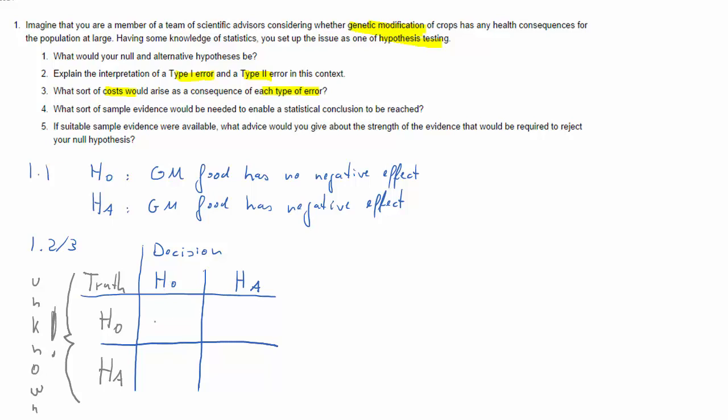Now if the truth is H0 and we decide H0, then we're all good. If the truth is HA and our test rejects H0, we're all good. But if the truth is H0 and we decide HA, we make a Type I error. Inversely, this is a Type II error.